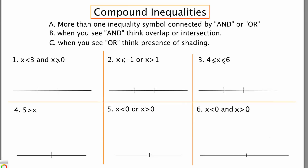I'm going to show you a few examples and hopefully those ideas will become more clear to you. In example 1, we have the compound inequality X is less than 3 and X is greater than or equal to 0. Let's start by focusing on the left hand side: X is less than 3. I'm going to put 3 on the number line, use an open circle to be exclusive, and then less than implies shading to the left. The second part of the inequality is X is greater than or equal to 0. I'm going to use a closed circle to be inclusive and greater means shade to the right. Because these two inequalities are joined by the word AND, I'm going to look for overlapping regions.